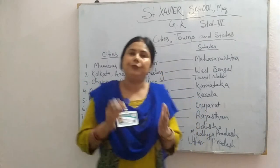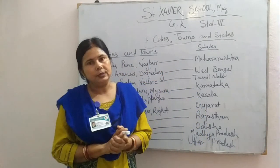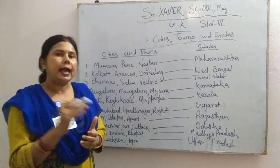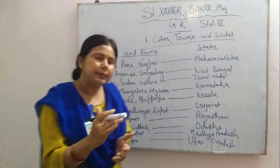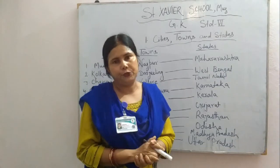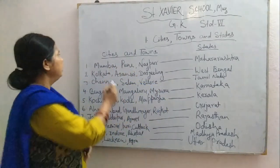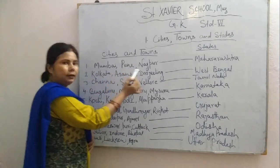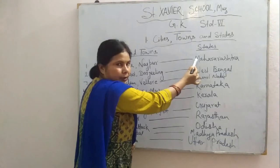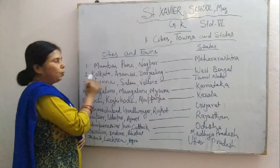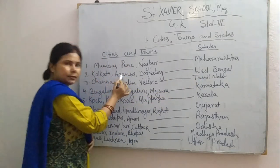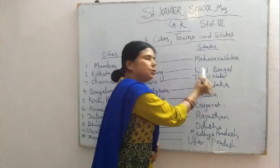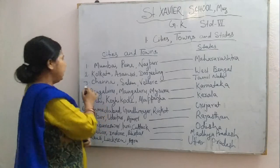So children, we have seen different cities and towns with their states. Once again I am repeating the important cities and their states. First: Mumbai, Pune and Nagpur are in Maharashtra. Second: Kolkata, Asansol and Darjeeling are situated in West Bengal. Third: Chennai, Salem and Vellore are located in Tamil Nadu.